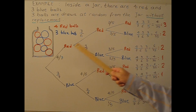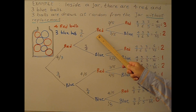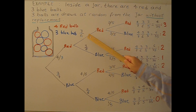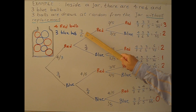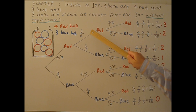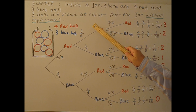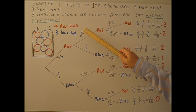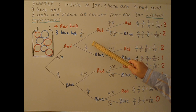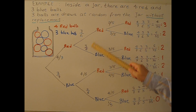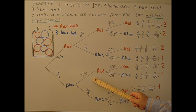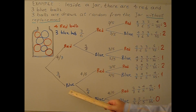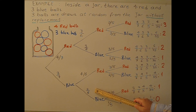If the first ball drawn is red, the denominator for the second draw becomes 6, because one ball has been removed. So: first red, second red is 3 over 6; first red, second blue is 3 over 6; first blue, second red is 4 over 6; and first blue, second blue is 2 over 6.